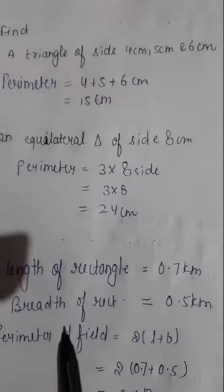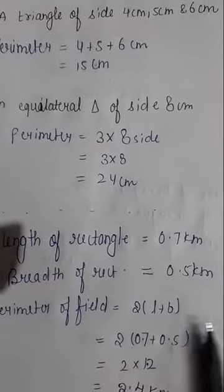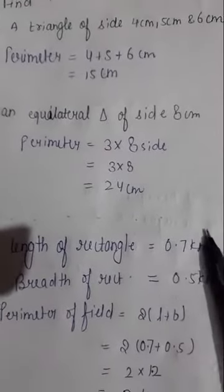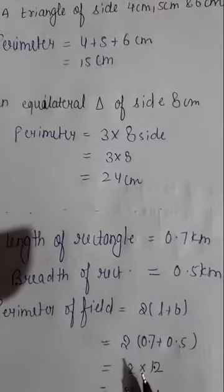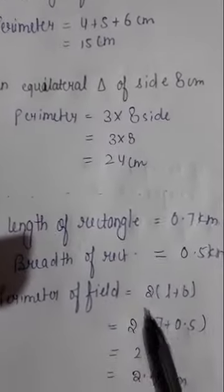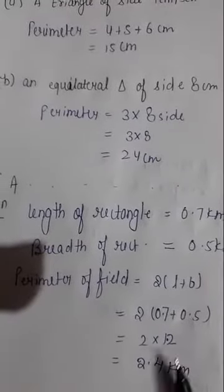Breadth 0.5 kilometer. Perimeter of field equals 2 times (l plus b). We put here l equals 0.7 and b equals 0.5, then we add 0.7 and 0.5 is 1.2. 2 into 1.2, answer